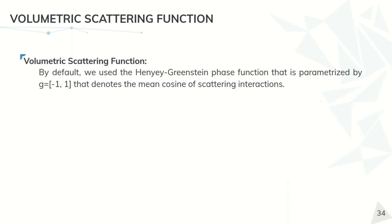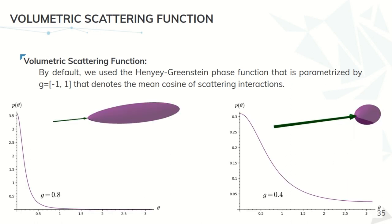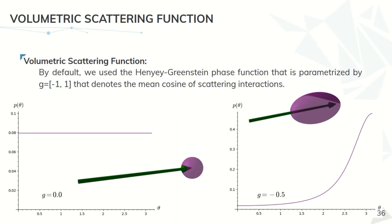In general, we let the user define its own volumetric scattering functions, but by default we use the Henyey-Greenstein phase function. This is very used in very different fields, like from astrophysics to graphics, and it can be very easily parameterized with just one value, this g, that can take values between minus one and one. Here we see that values of g close to one can give us scattering in the forward direction, most of the scattering is happening in the forward direction, and if we reduce this value, this is less and less true. If we consider g equals zero, we have isotropic scattering across all directions, and for negative values of g, we have scattering mostly in the backward direction.